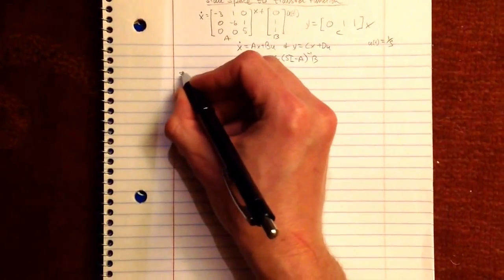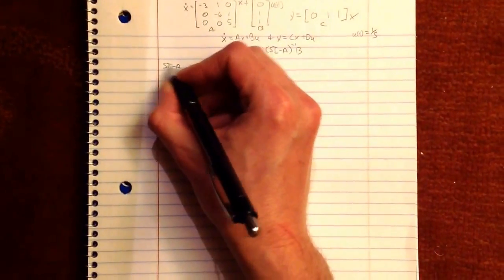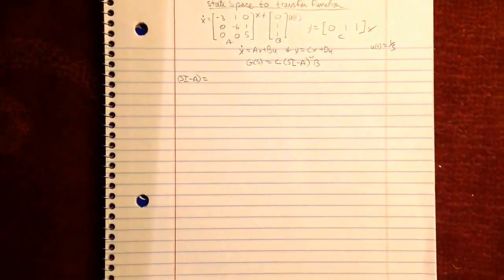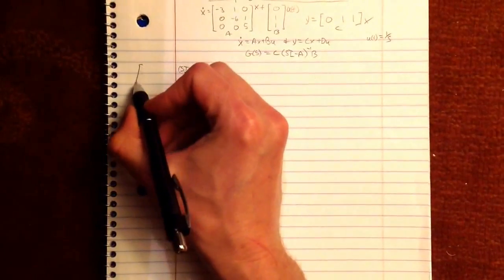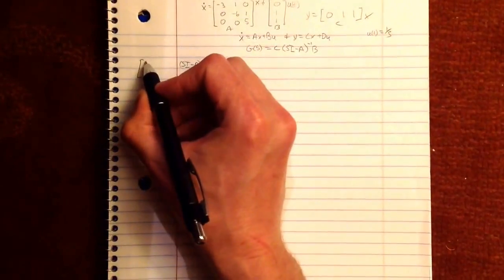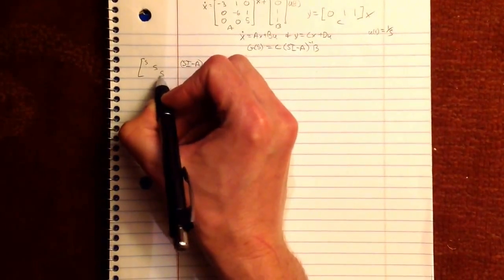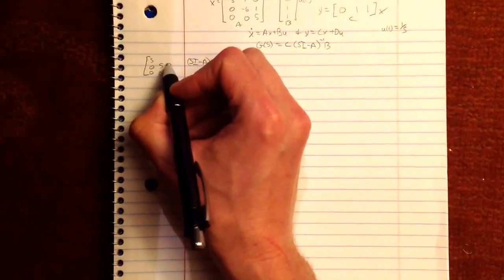So the very first thing you have to do is get this. The S identity matrix is simply, well in this case because it's a 3 by 3: S, 0, 0, 0, S, 0, 0, 0, S.